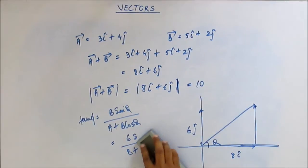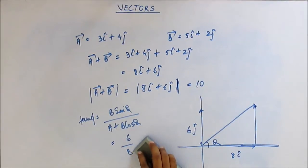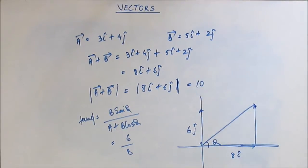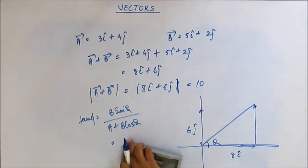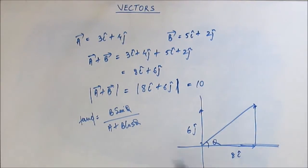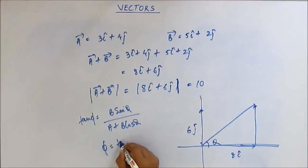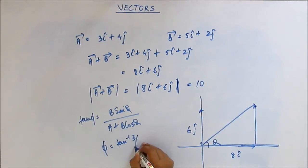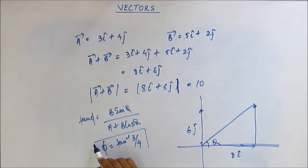So the angle we are looking for is tan inverse of 6 by 8, which simplifies to φ equals tan inverse of 3 by 4. This is the angle which the resultant vector makes with the x-axis.